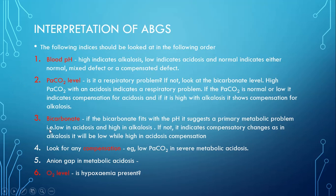Thirdly, we look at the bicarbonate level to determine if the problem is metabolic. If pH is high and bicarbonate is also high, it is a primary metabolic alkalosis. If pH is low and bicarbonate is also low, it is primary metabolic acidosis. Bicarbonate is low in acidosis compensation for alkalosis, and high as compensation for acidosis.